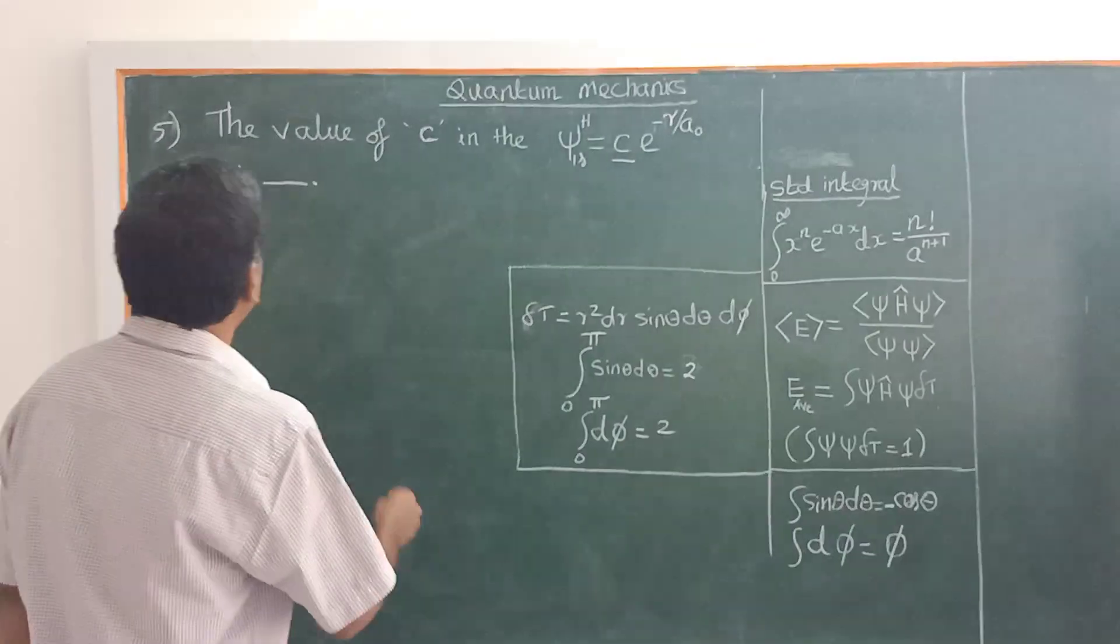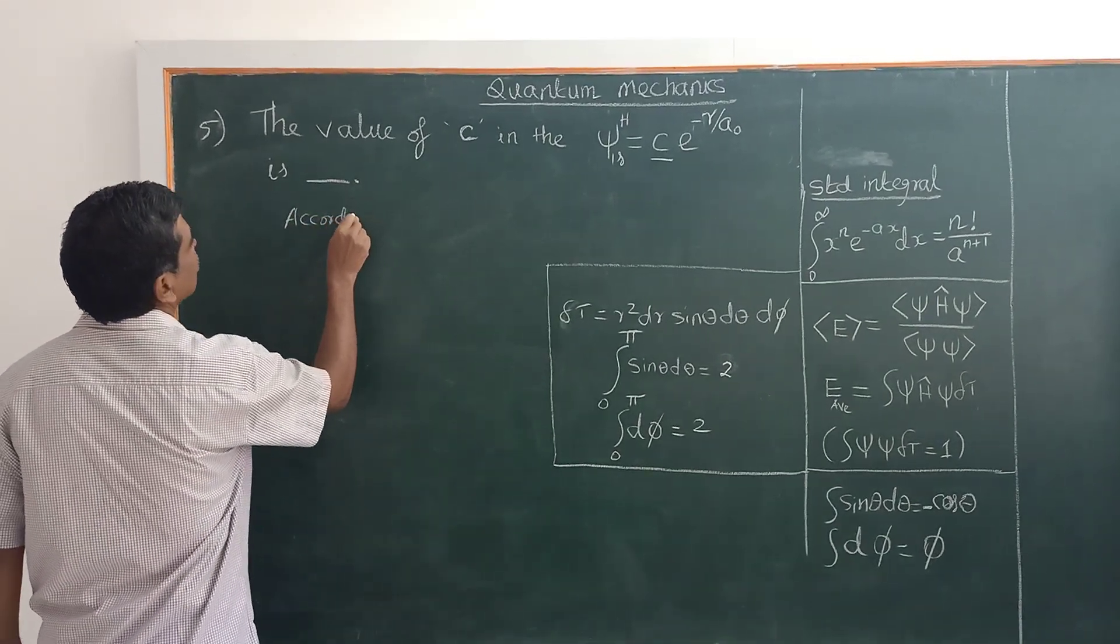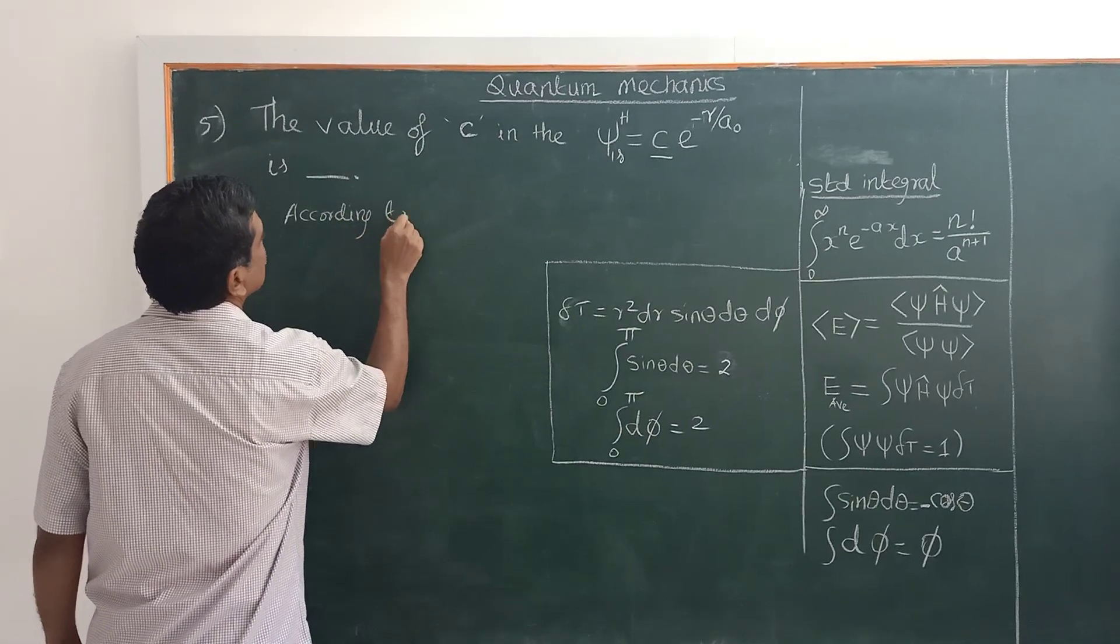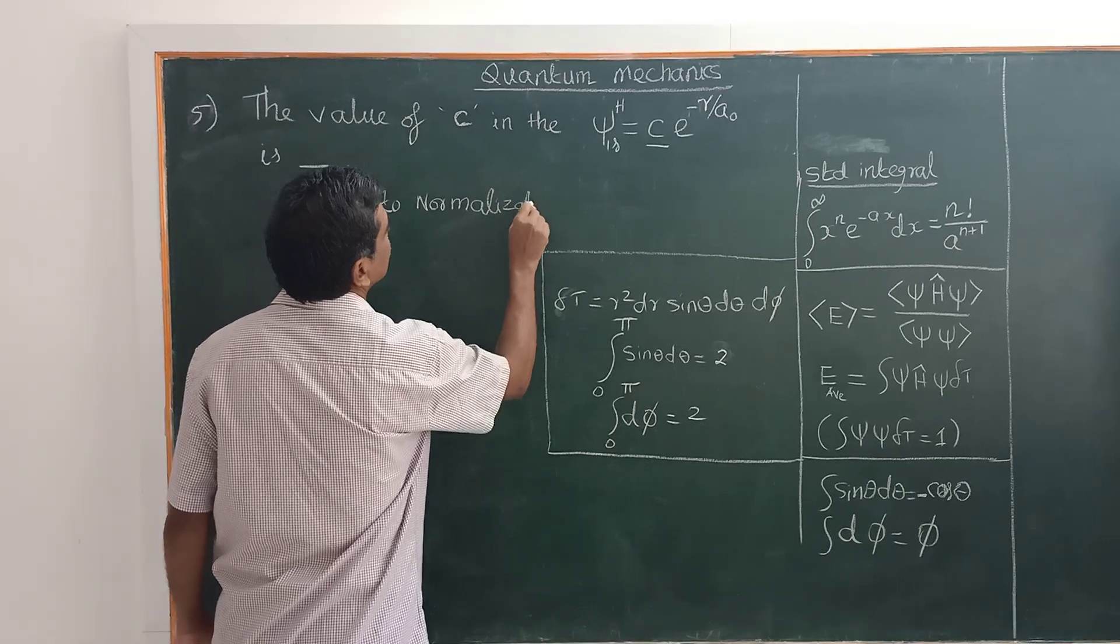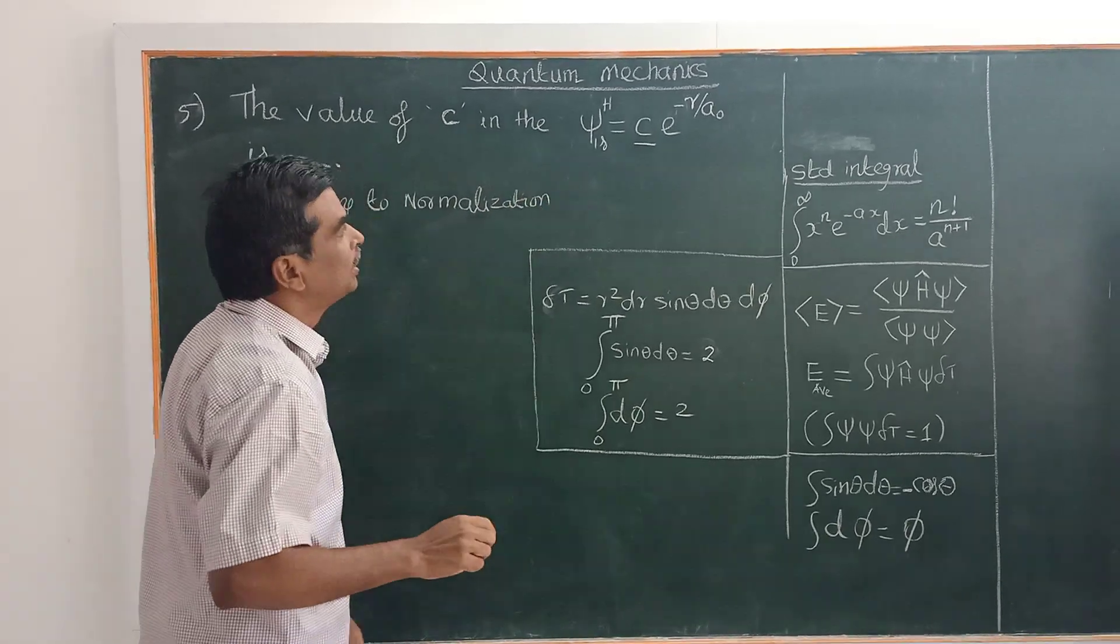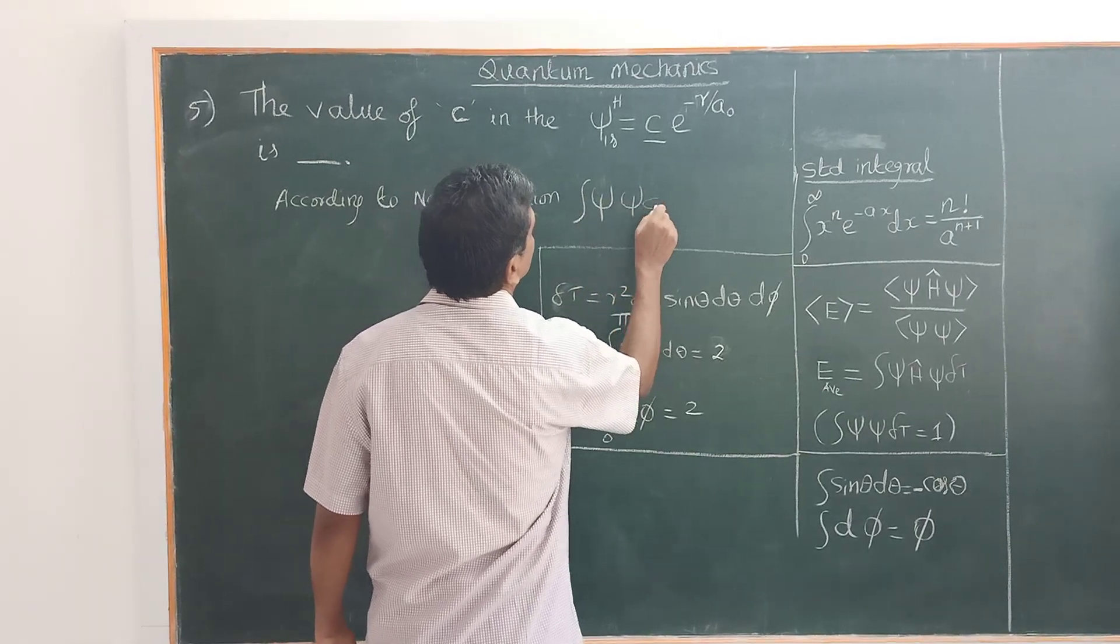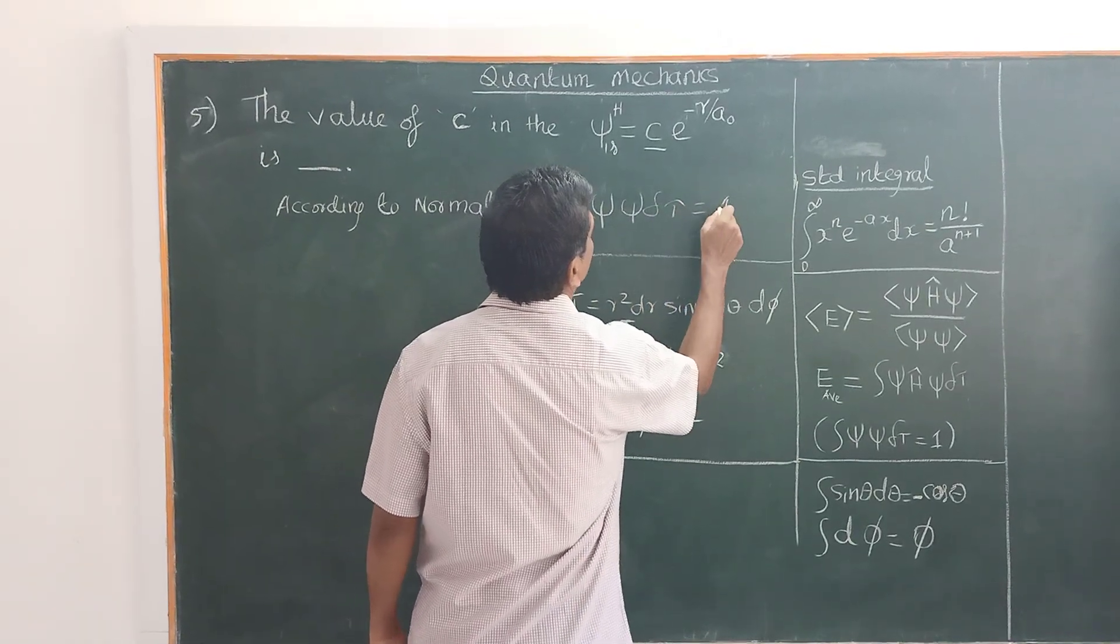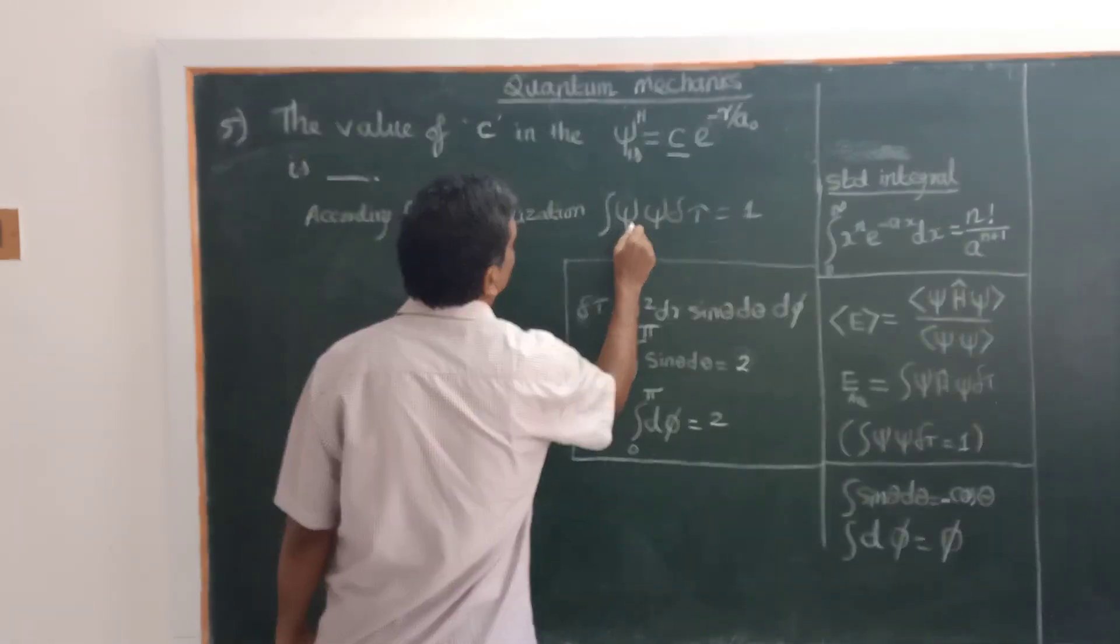According to the Normalization Condition, which we have mentioned earlier, the integral of psi squared d tau equals 1. Now, we have psi given here.